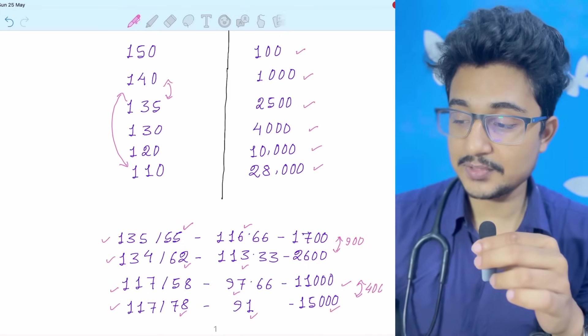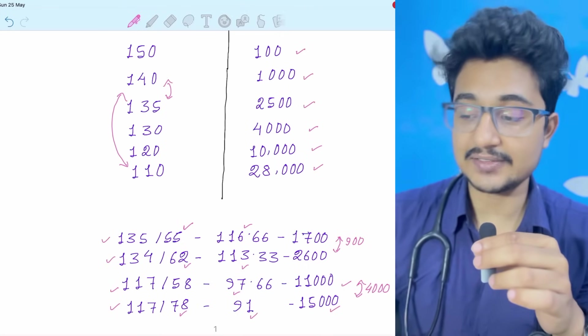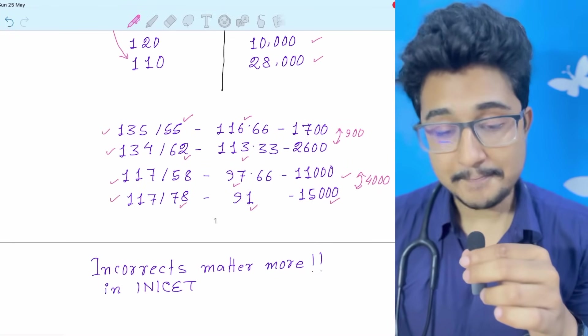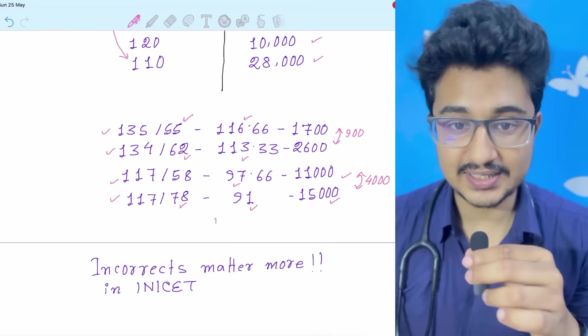That means in same number of corrects there is a difference of 4000. So in INICT, incorrect matters more than the number of corrects, I will say.